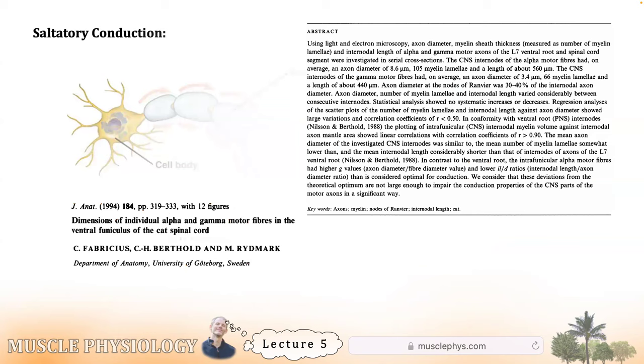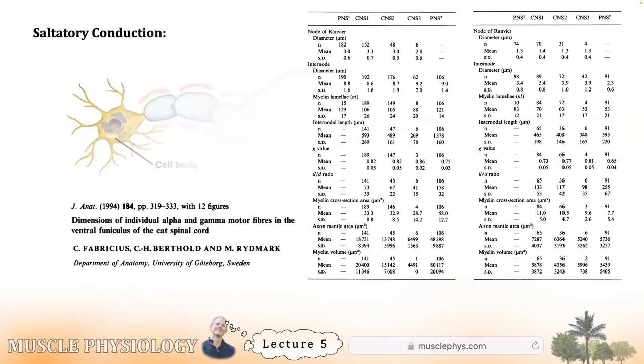And now a recurring theme in all of these lectures is variance. Nerves vary in thickness. Both axon diameter and myelin layers both. How layered is the myelin and how thick is the axon? Both of these things vary. So here's a glimpse at some diameters. Alpha fibers on the left, gamma fibers on the right. Nothing you need to memorize here. But if you look at the diameter in micrometers of an alpha fiber at the node of Ranvier, you'll see an average of about three in the peripheral nervous system and about 3.3 in the central nervous system compared to a gamma fiber, which is just under half of that thickness at each of those sites. So nerves vary. Without memorizing any numbers, those differences in general will become important in future lectures.